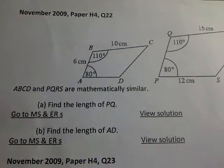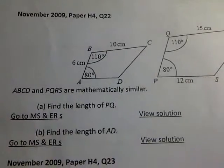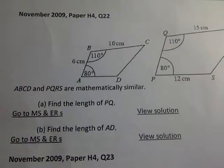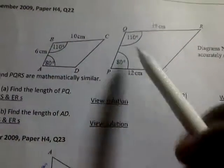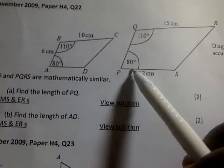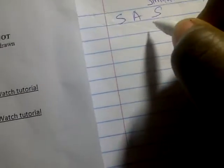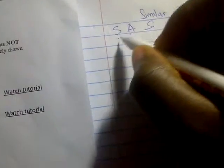This question says ABCD and PQRS are mathematically similar. Find the length of PQ and find the length of AD. What do you mean by mathematically similar? This takes me to a topic titled similar shapes. Similar shapes are those shapes that may not necessarily have the same height, but maybe they have side-angle-side, or two sides and one angle equal for the two shapes.